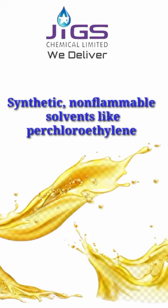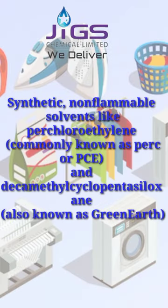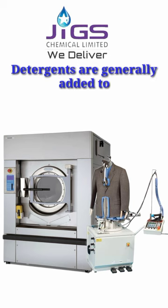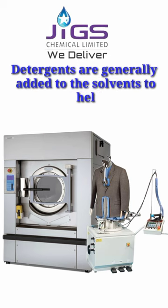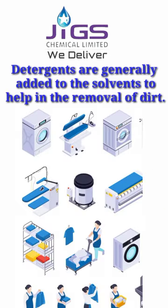Synthetic, non-flammable solvents like perchloroethylene, commonly known as PERC or PCE, and decamethylcyclopentasiloxane, also known as green earth, were developed in the 1930s and are still in use today. Before dry cleaning begins, detergents are either added to the solvent or they are added at specific intervals throughout the procedure.